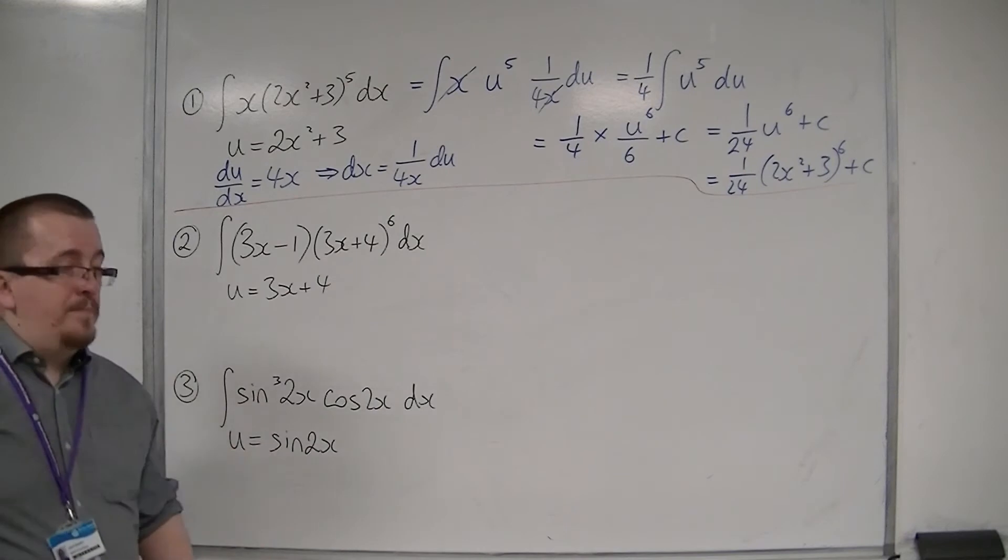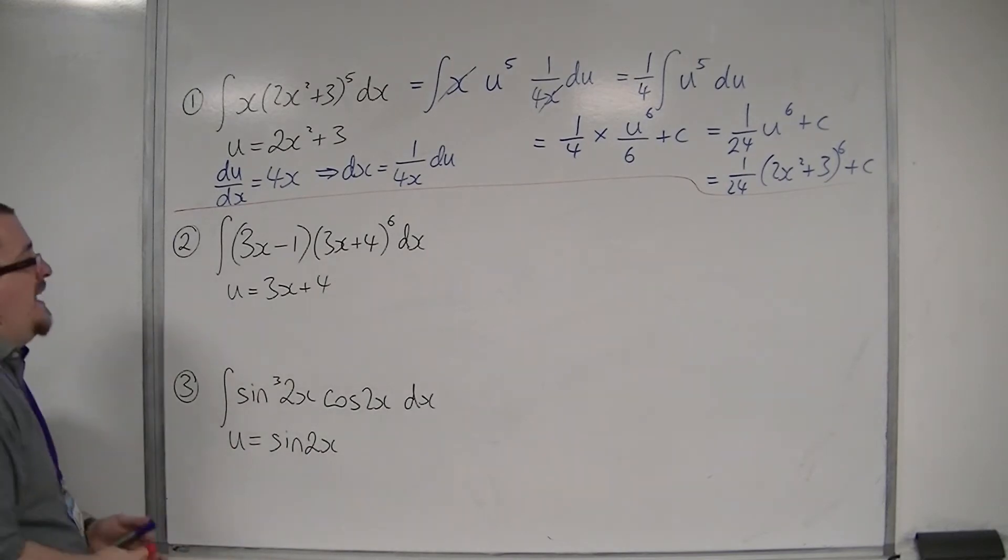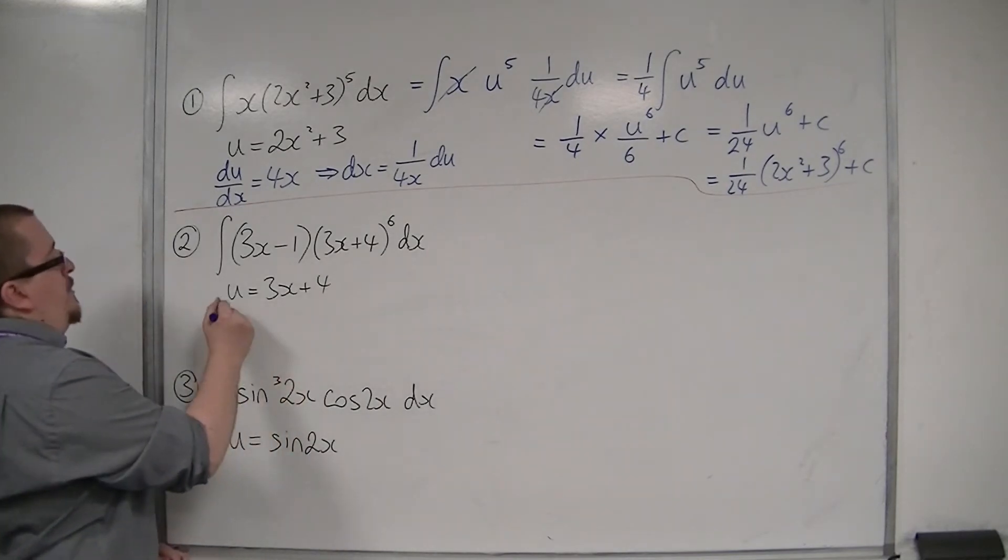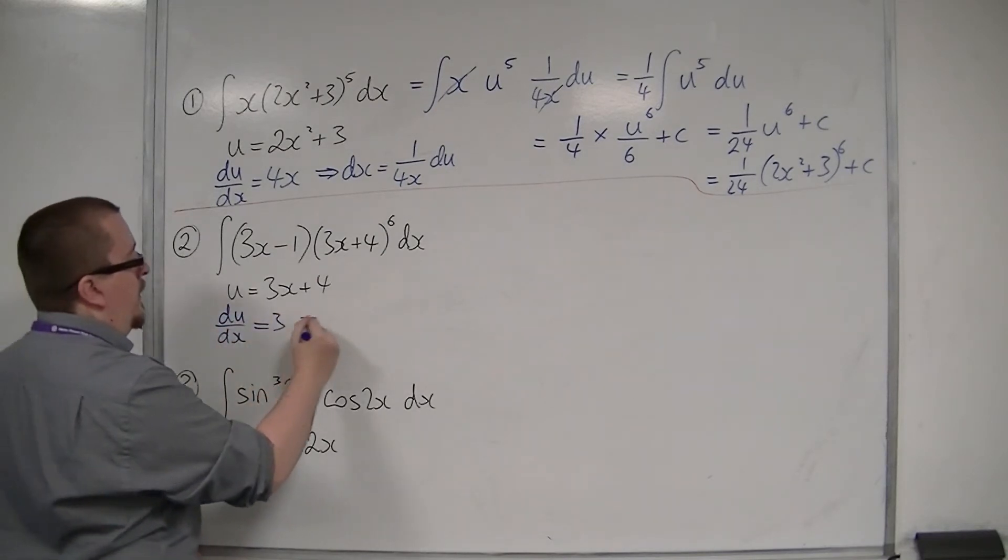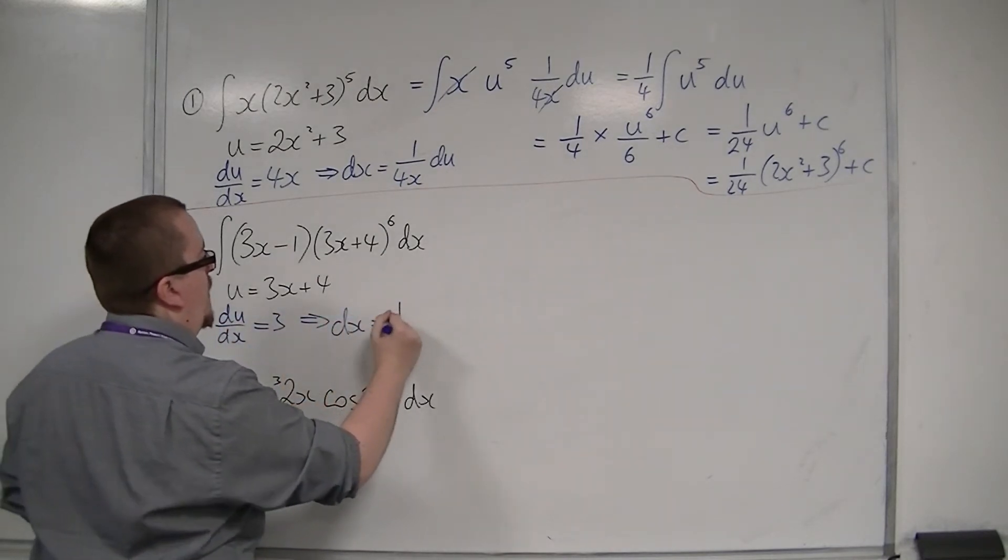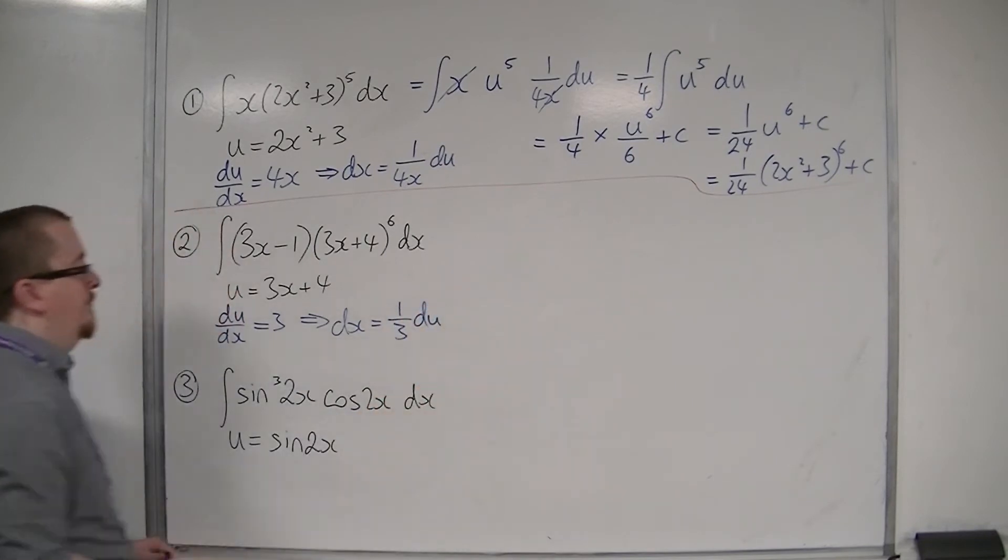Now, let's have a look at the second one. We have u equals 3x+4, so du/dx would be equal to 3. So dx must be equal to 1/3 du. I've got the replacement for dx.